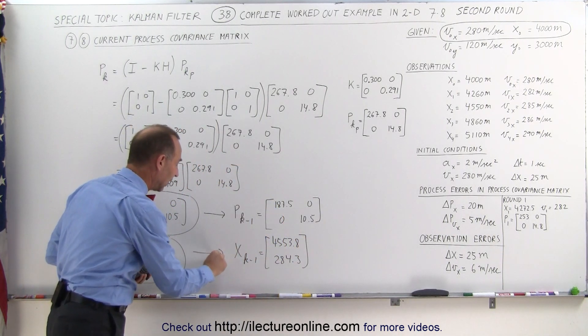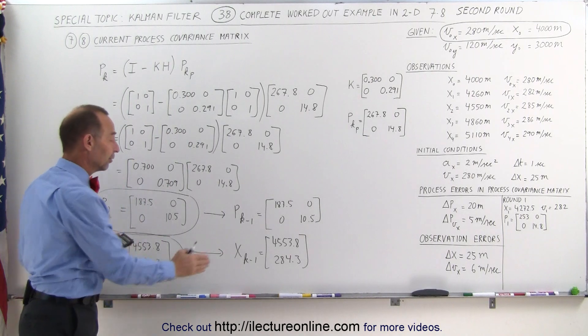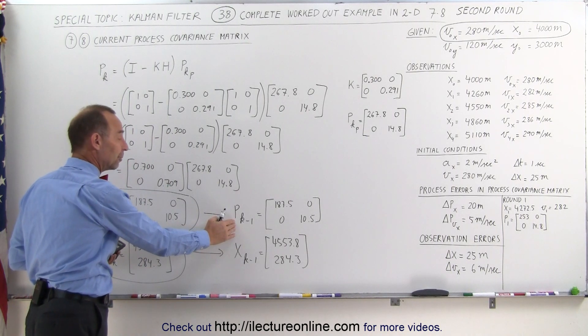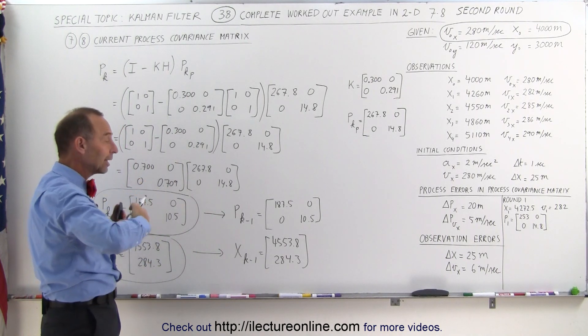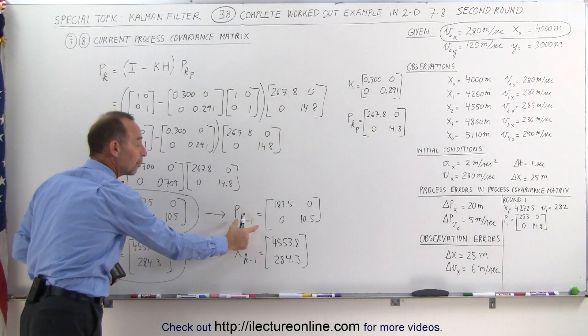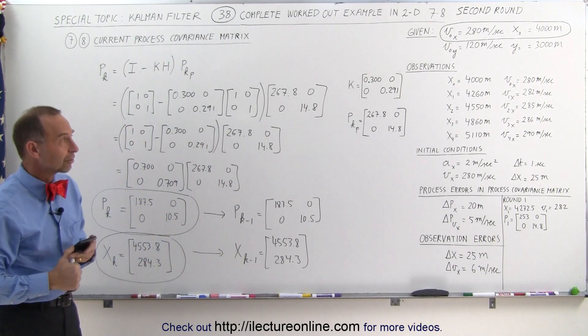It seems like a trivial step, but just to realize that whatever value you obtain for the state matrix and the process covariance matrix in the previous round, then gets converted to the next round as being the previous state and the previous process covariance matrix.